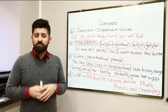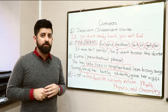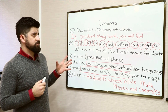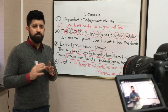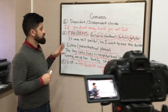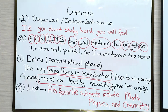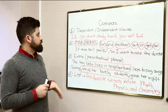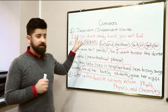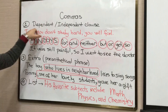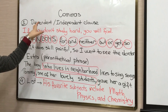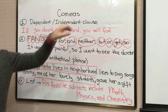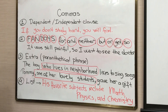Now I'd like to specifically talk about commas. When there is a break or pause in a sentence, we use commas. We have four categories. The first one is the dependent/independent clause — in order to separate a dependent phrase from a complete sentence, we use a comma.